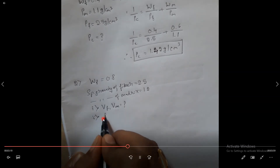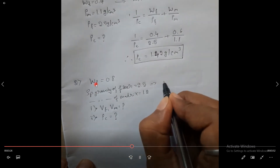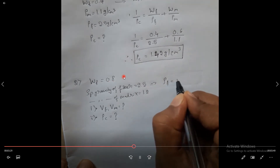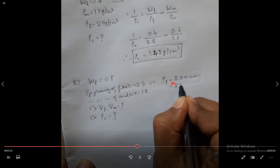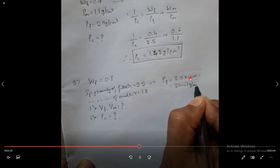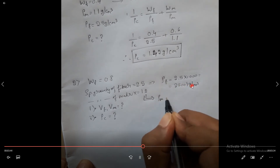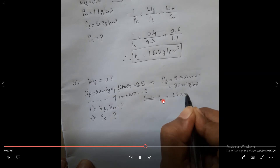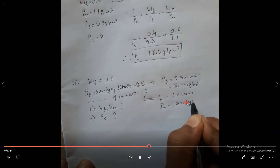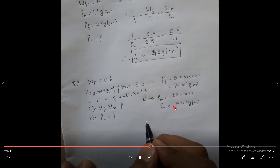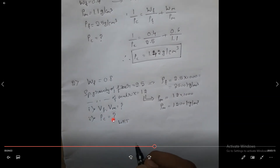Since the weight fraction of the fiber is given, I can calculate the weight fraction of the matrix. Specific gravity is also given, so I can calculate the density. To calculate density, simply multiply by 1000. The density of the fiber is equal to 2500 kg per meter cube. In the same way, density of the matrix is equal to 1.2 multiplied by 1000, which leads to 1200 kg per meter cube. Since I got the densities, I am able to calculate the density of the composite.